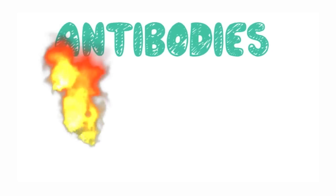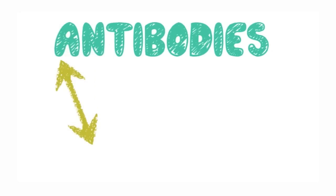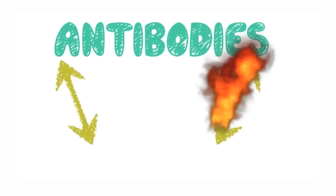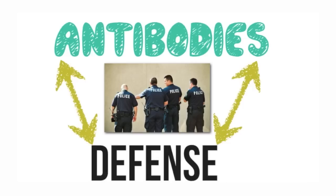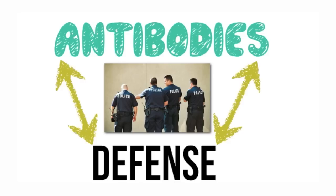Keep in mind from your biology class that the immune system has very important functions. Thanks to this system, we can keep the bad guys away. The immune system — represented here as police — is kicking out all the bad stuff you have in your body that you don't want, because you don't want to be ill. So antibodies are involved in the defense mechanism of your body.